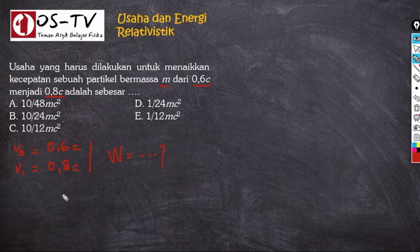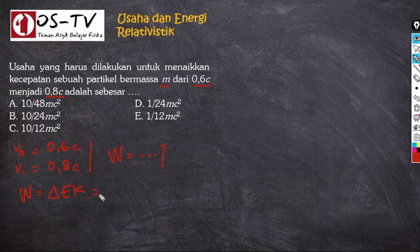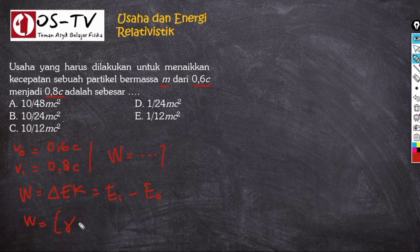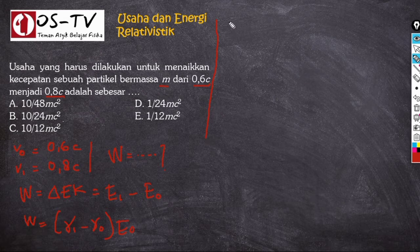Karena yang ditanyakan adalah usaha, kita gunakan persamaan W = perubahan energi kinetik = E₁ − E₀. Karena kita berada dalam nuansa relativistik, persamaan ini menjadi W = (γ₁ − γ₀) × E₀. Nilai gamma ditentukan dengan persamaan γ = 1 / √(1 − V²/C²).